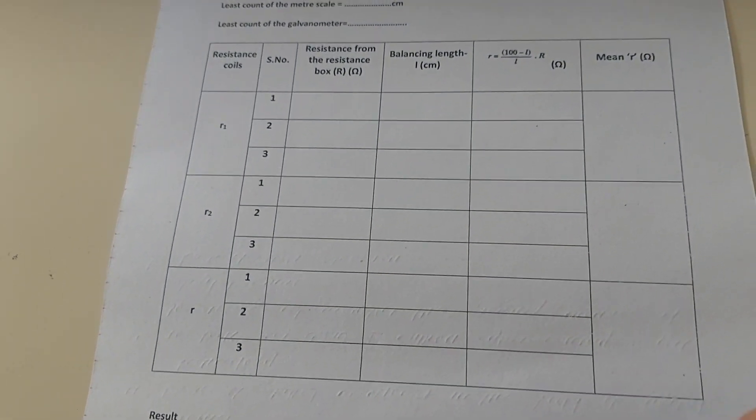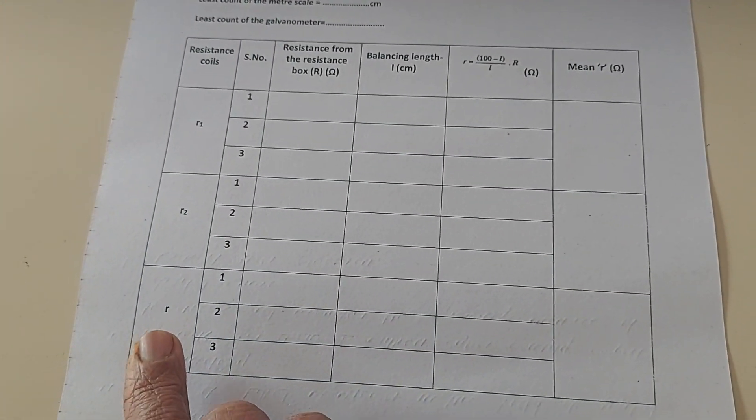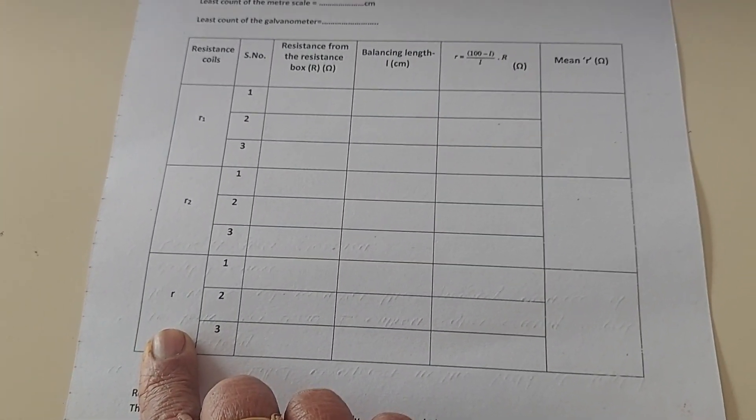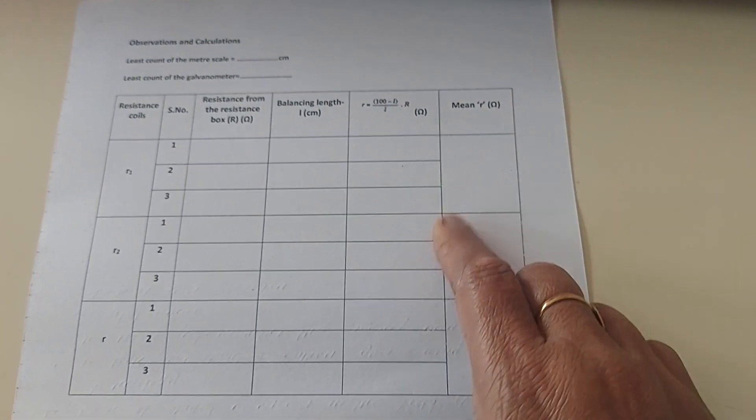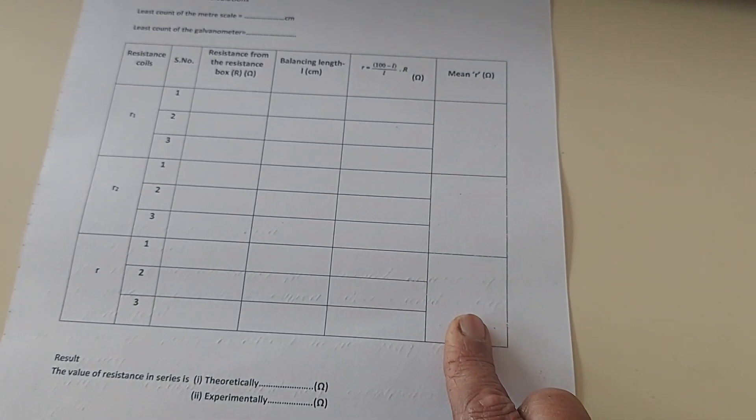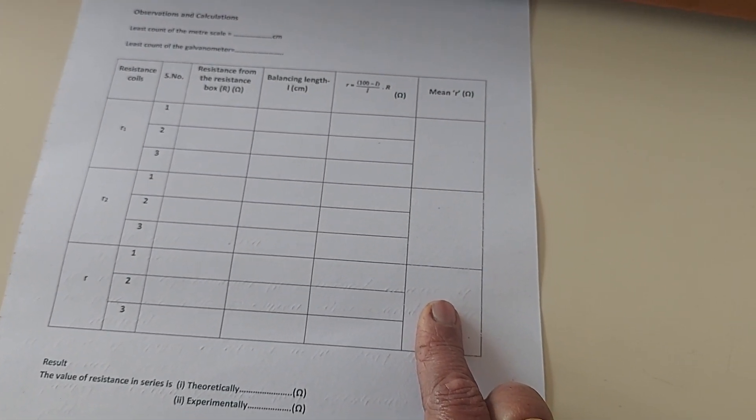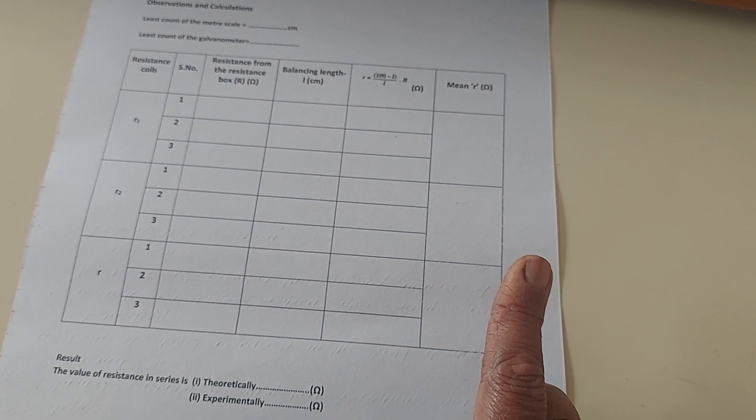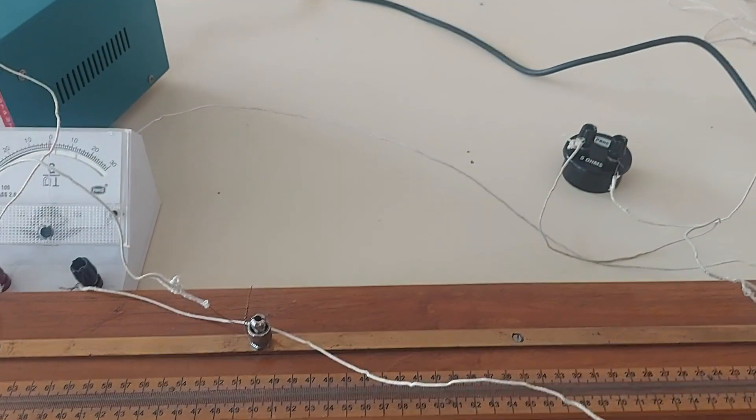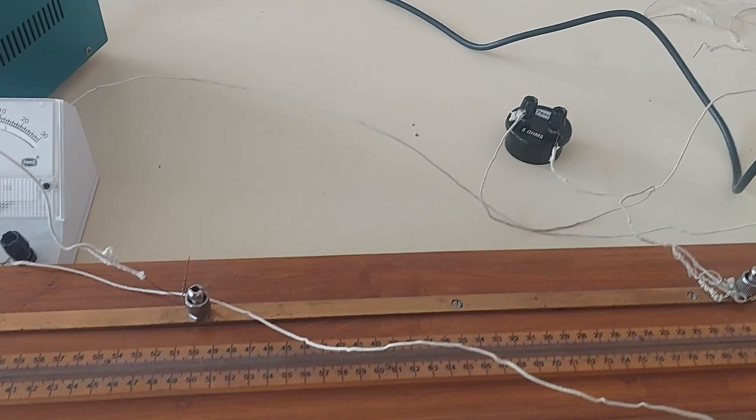Now coming to this experiment, first we will verify the value of R1, R2, and then we put it in series as R and then calculate the value. So what we get as R1, R2 experimentally should be nearly the same when we calculate with the help of Wheatstone bridge principle. First we will take one reading with R1, one with R2, and two readings with R1, R2 put in series.